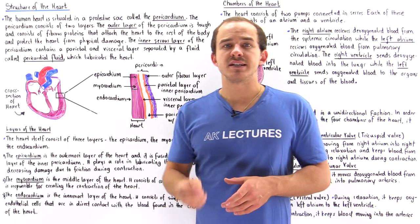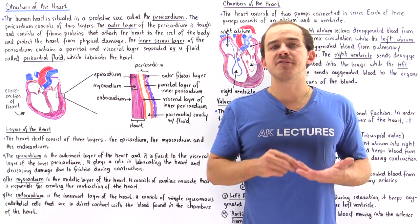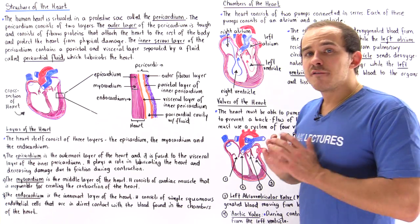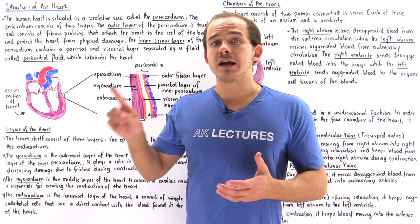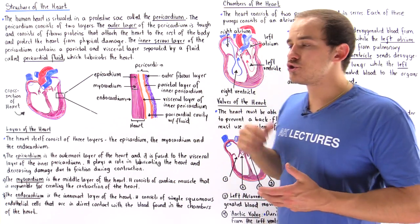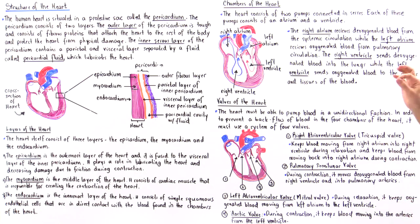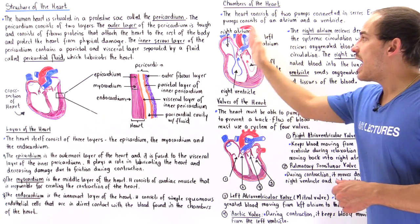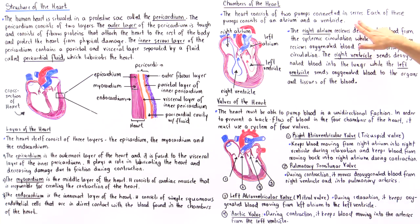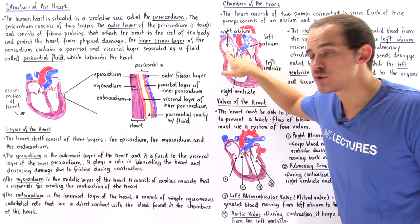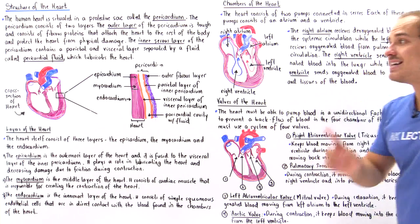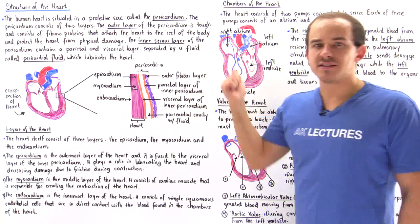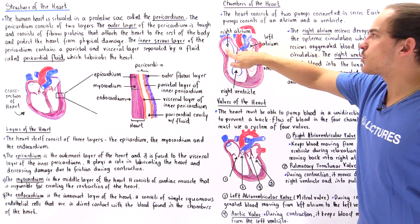Each one of these pumps consists of two chambers: the atrium and the ventricle. The atrium is the chamber that receives blood from the rest of our body, and the ventricle receives blood from the atrium and pumps it to the organs, tissues, and cells of our body. The right atrium receives deoxygenated blood from the systemic circulation.